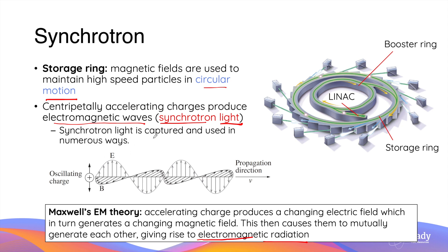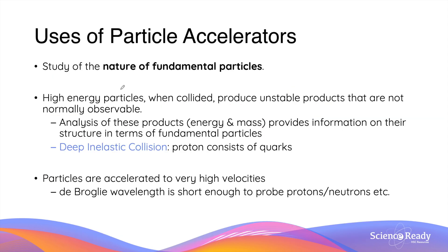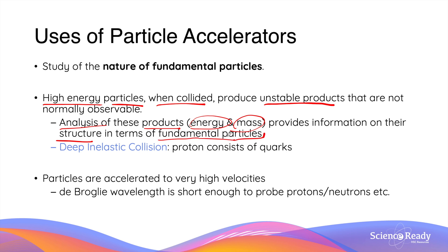The synchrotron light is then captured by various stations around the synchrotron and used in different applications. There are many applications of particle accelerators. Primarily in physics, particle accelerators are used to study the nature of fundamental particles. When particles reach high speed they possess very high kinetic energy, and when these high-energy particles collide with one another they can produce unstable products not normally observed. By analyzing these products — for example their energy and mass — we gain information on the structure in terms of the elementary particles described in the standard model of matter.